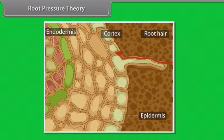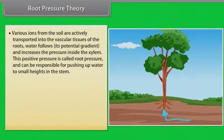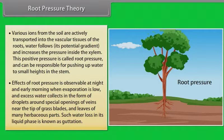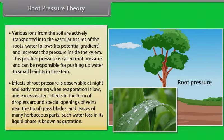Root Pressure Theory. Till now we have learnt how plants absorb water from the soil and move it into the vascular tissues. Now we will learn how this water is transported to various parts of the plant. Various ions from the soil are actively transported into the vascular tissues of the roots. Water follows its potential gradient and increases the pressure inside the xylem. This positive pressure is called root pressure and can be responsible for pushing up water to small heights in the stem. Effects of root pressure is observable at night and early morning when evaporation is low and excess water collects in the form of droplets around special openings of veins near the tip of grass blades and leaves of many herbaceous parts. Such water loss in its liquid phase is known as guttation.